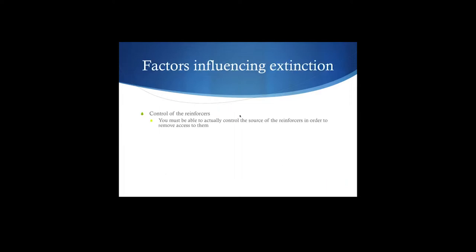Factors influencing extinction: control of the reinforcers. If you don't have access to or control over the reinforcer, you're never going to be able to extinguish a response. For example, cigarette smoking produces reinforcers — positive reinforcement from nicotine added, and negative reinforcement from withdrawal symptoms and stress being decreased. We don't have control over those reinforcers. You can't block the nicotine, so you really can't extinguish cigarette smoking behavior.